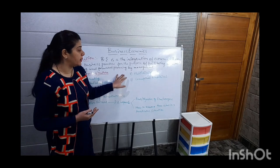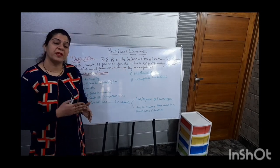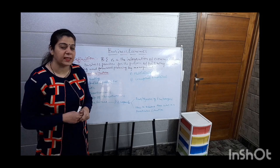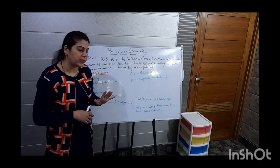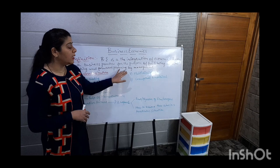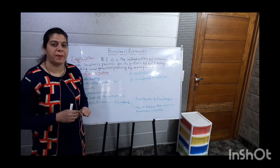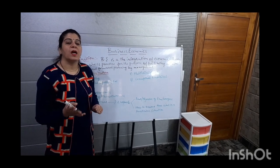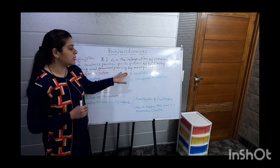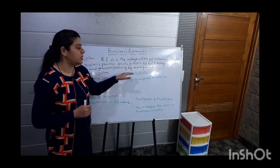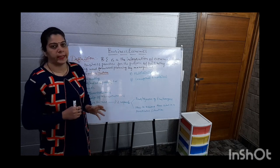Next is the multidisciplinary nature. As we studied in the definition, business economics is the integration of economic theories and their practical use — but this integration also involves many disciplines and many departments. It depends on the production department, operations department, operations research, and statistics — all these things. Its effect is also seen in other departments.